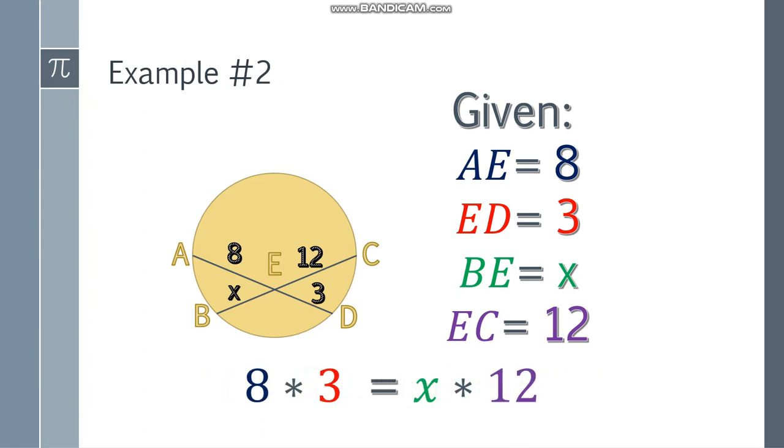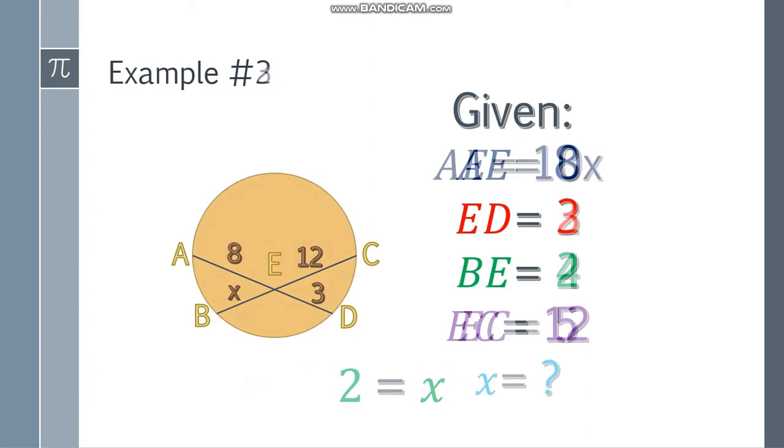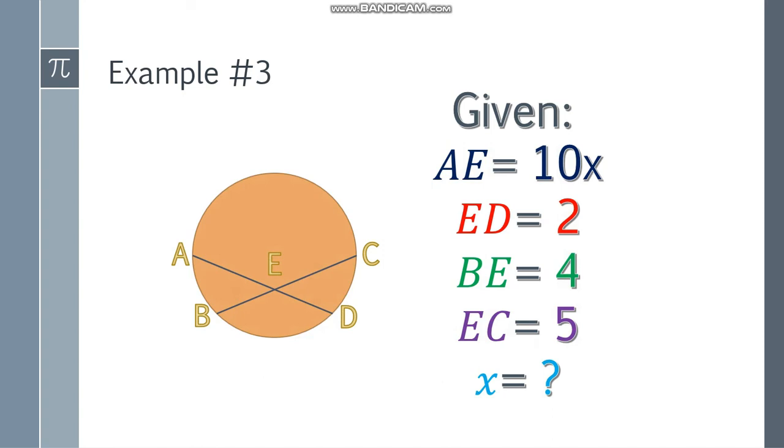Our AE is 8, so 8 times 3 is equal to X times 12. So partner them up. Simplified, 8 times 3 is 24. Then on the other side, X times 12 is 12X. Divide both sides by 12, and X is equal to 2. So 2 is the value. Moving on.